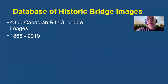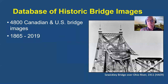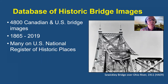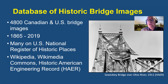The database of historic bridge images that we've assembled contains 4,800 Canadian and American bridge images. The bridges date from 1865 to 2019. This photo is of the anchor span of the Sawicki Bridge over the Ohio River, constructed in 1911. Many of the images are of bridges on the American National Register of Historic Places, and the images are collected from Wikipedia, Wikimedia Commons, and the Historic American Engineering Record, HAER.